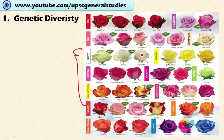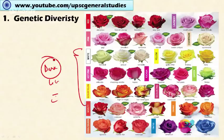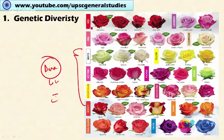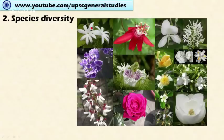Genetic diversity helps organisms adapt to climatic conditions, helping them survive for a longer duration. For example, human beings have different skin colors — darker, lighter, and medium. Darker skin color, mostly found in tropical and hot climatic conditions, helps human beings withstand higher temperatures and more intense sunlight. Lighter skin color found in temperate countries is suited to milder temperatures. This is how genetic diversity helps in adapting to climatic changes.